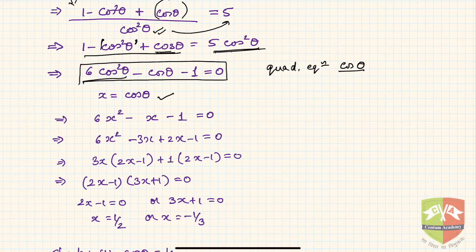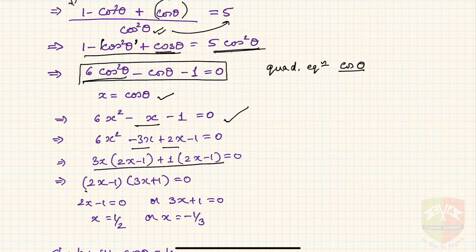We can use the quadratic formula, but here we use splitting the middle term. The middle term -x can be expressed as -3x + 2x. Then we factorize: 3x(2x-1) + 1(2x-1) = 0, giving us (2x-1)(3x+1) = 0.